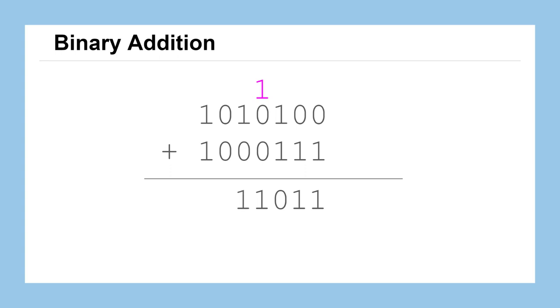The next column has a sum of 1, a sum of 0, and then lastly, a sum of 2, which we would represent as 1, 0. So we write the 0 down below, carry the 1 up to the next column, and then add that last column.